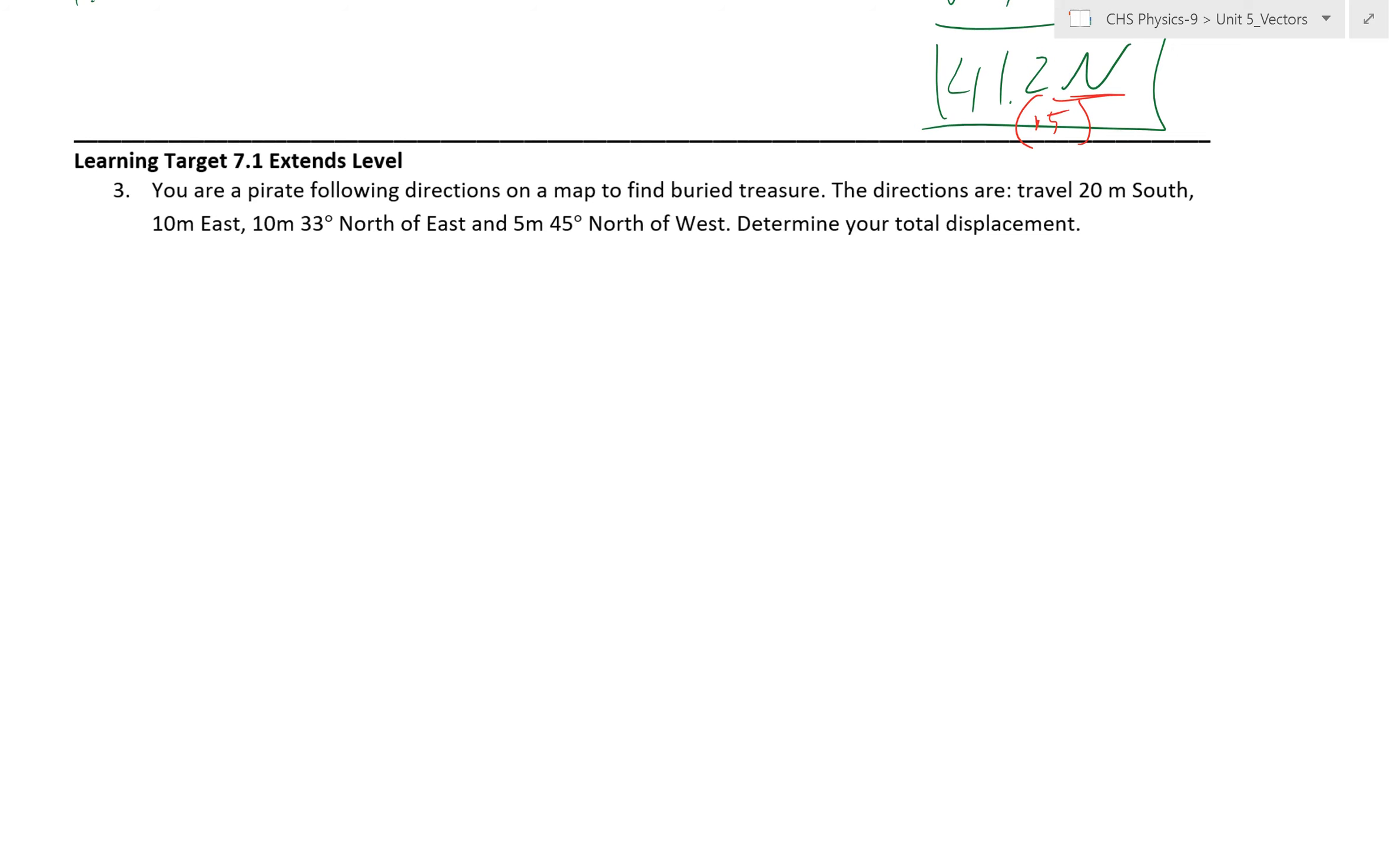Alright, onward to the last problem, so extends. A lot of people struggled with this. So in the end, what we have is we've got four parts to this problem. We've got, we're going to travel south 20 meters, east 10 meters. And then this one, the 10 meters, 33 degrees north of east. Northeast is this way, and we know that that angle is going to be 33 degrees. So that's this one. And then this last one, we've got 45 degrees northwest or north of west. So we've got here, and the angle is 45 degrees. And this would be five meters, and this would be 10 meters.